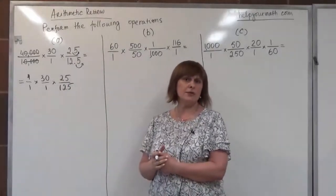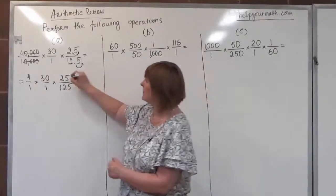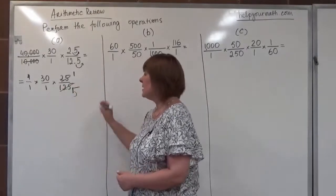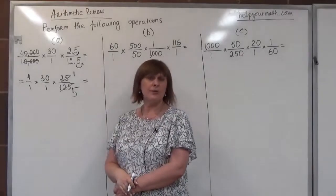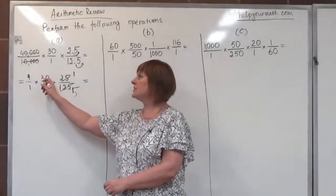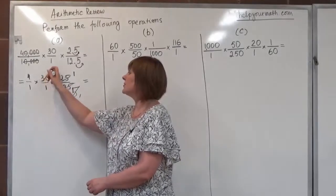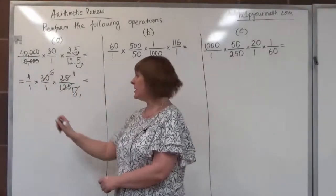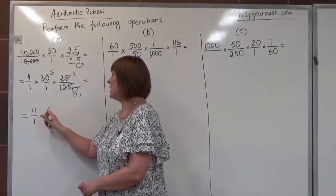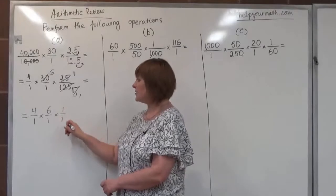Now we can see that in the third fraction we can reduce 25 and 125 — 25 fits into 125 five times. We can also notice that 30 and 5 can be reduced; we divide both by 5, giving us 6. So let's look at what is left: we have 4 over 1, and 6 over 1, and 1 over 1, which is just 1.